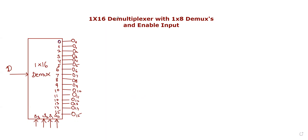First, the 1 by 16 D mux block diagram. There is one single input and 16 outputs, numbered 0 to 15, so outputs O0 to O15. The 1 by 16 is in the form of 1 by 2 to the power 4, and there are 4 selection inputs: S0, S1, S2, S3. This is the 1 by 16 D mux.